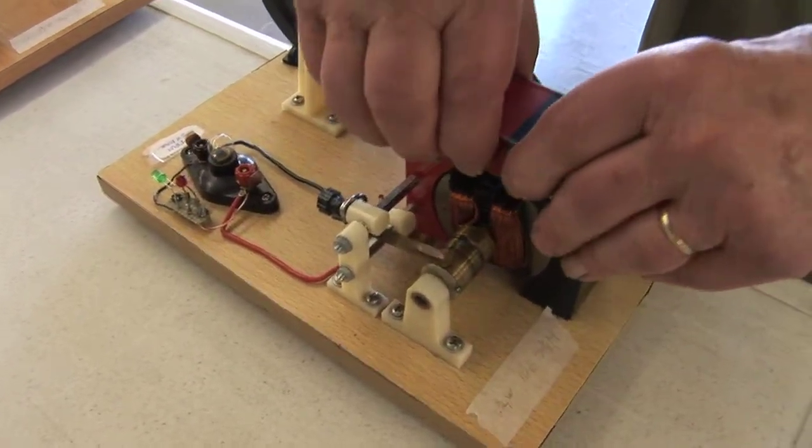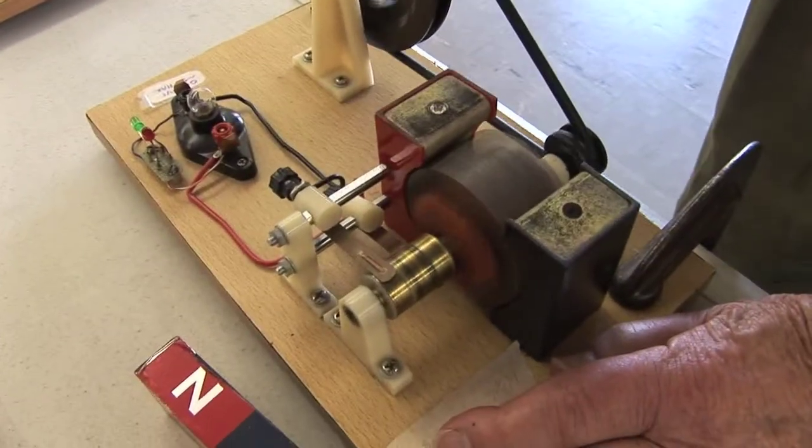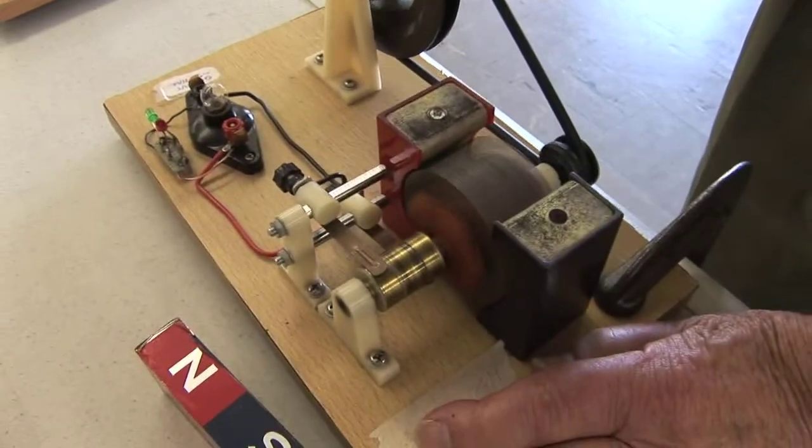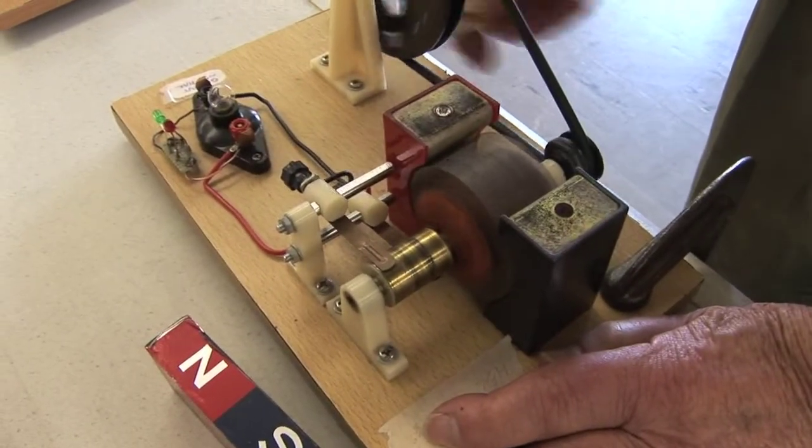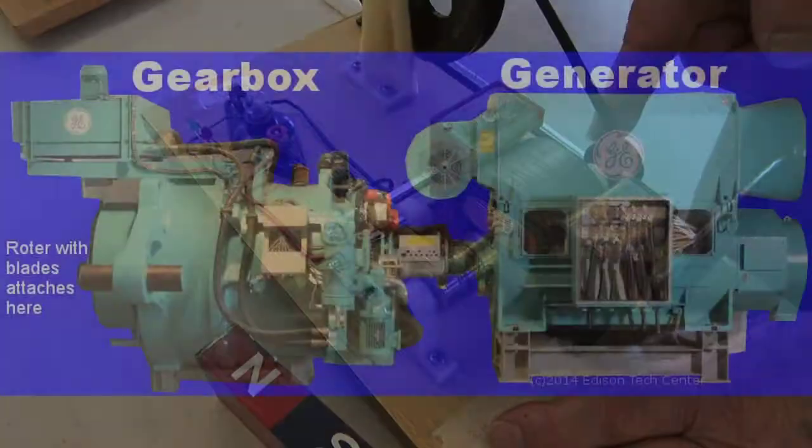But if you take the magnet away and rotate all you want, nothing happens. You've got to have a magnet and the wires, and that's how you make electricity. You can do it by any means that allows you to turn that shaft.